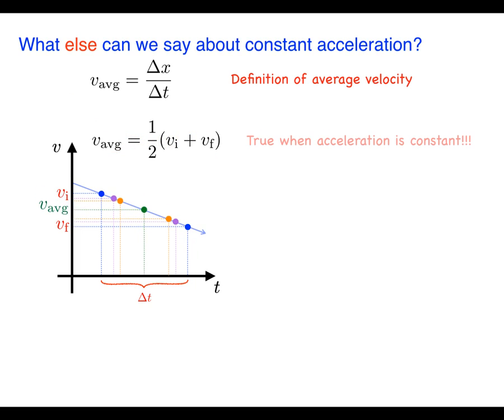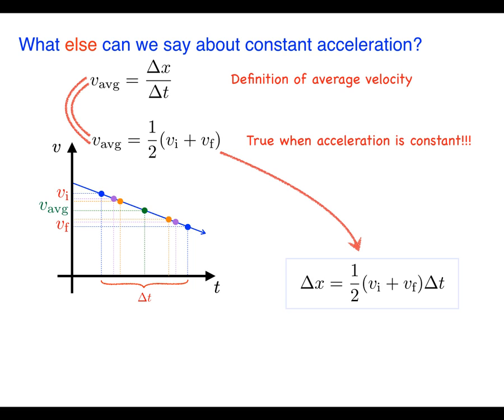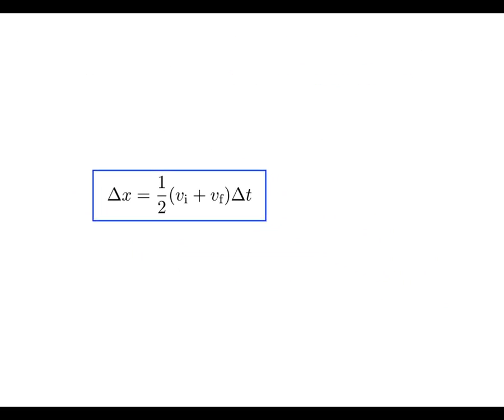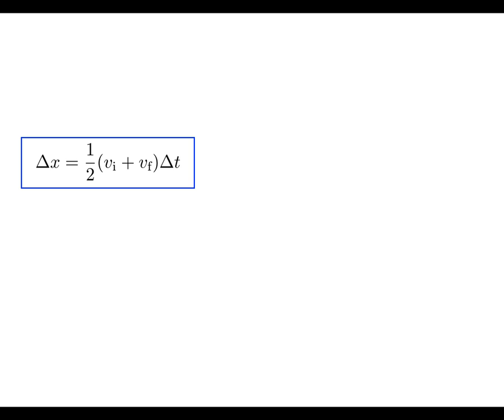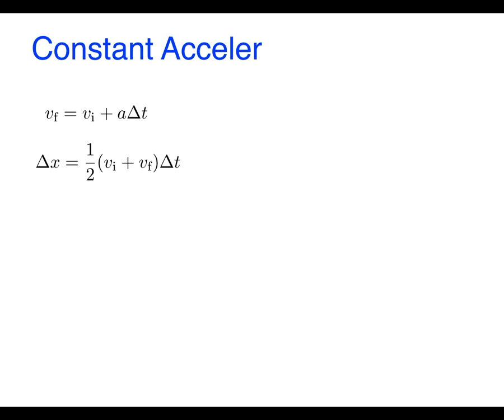So getting back to constant acceleration. We now know that for constant acceleration both of these equations are true and so we can set them equal to each other. And the result when you do the algebra is this: Δx equals one half the quantity v_i plus v_f times Δt. So this is the second of the constant acceleration equations. We can add the first one that we derived to that and put a label on here constant acceleration equations.